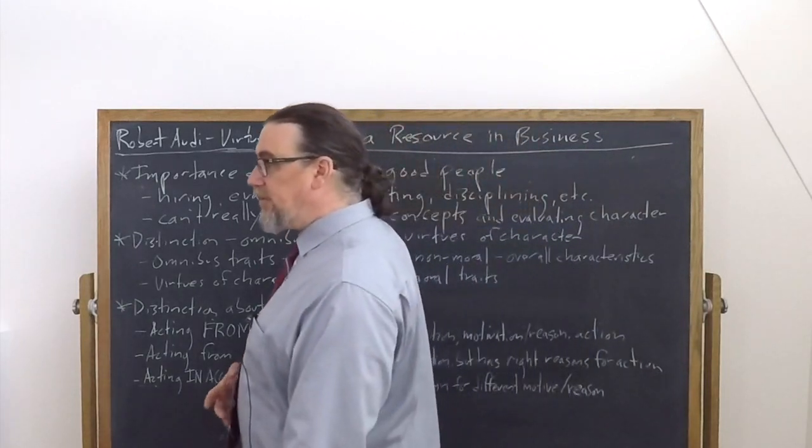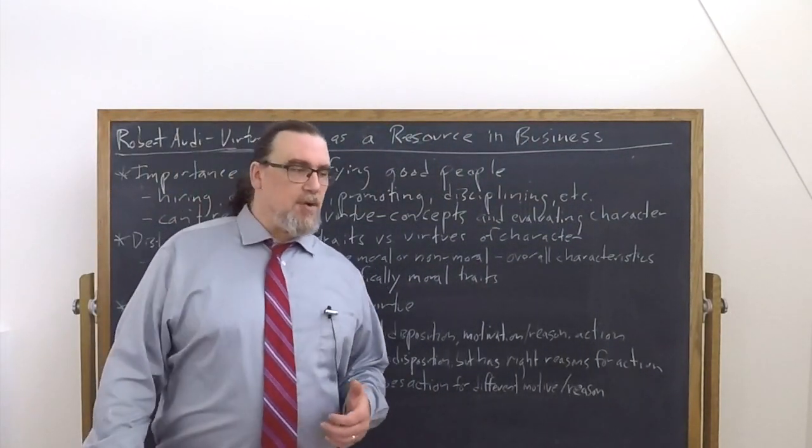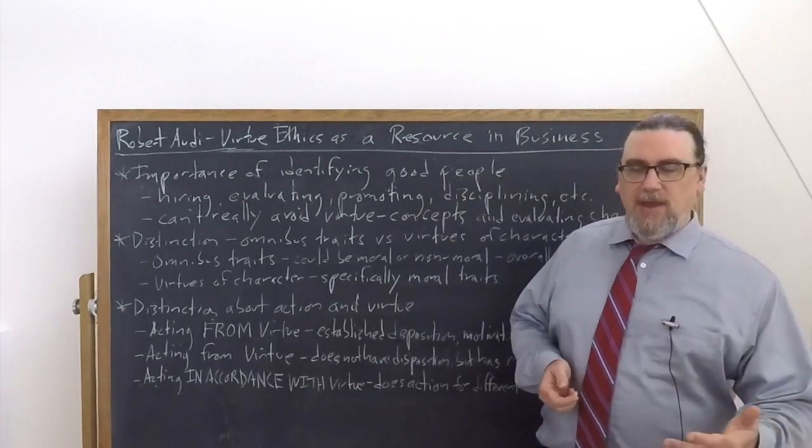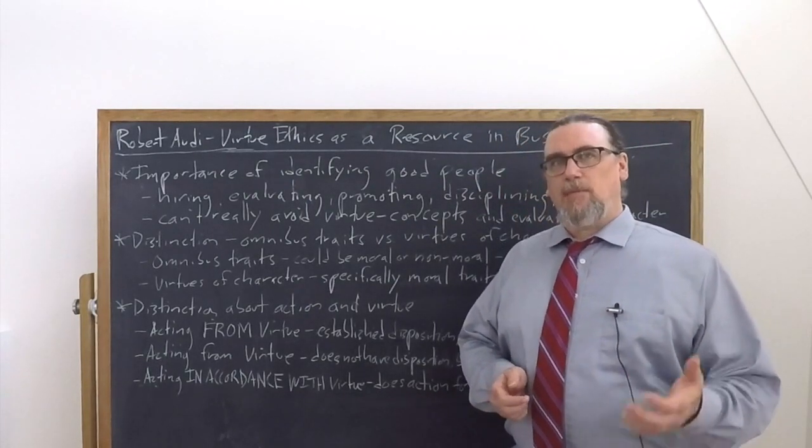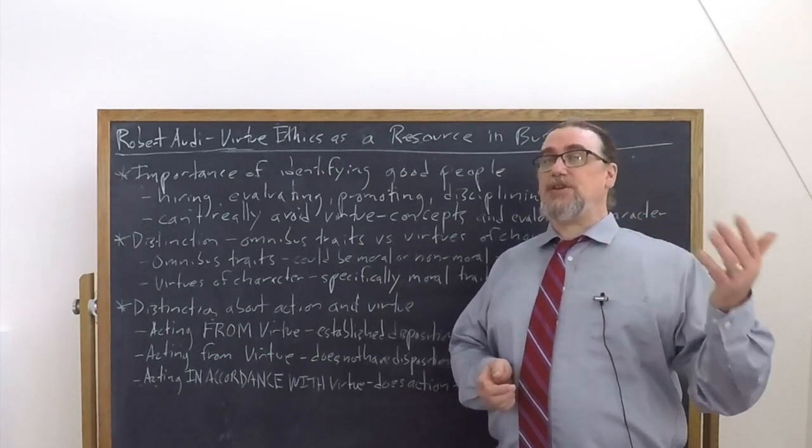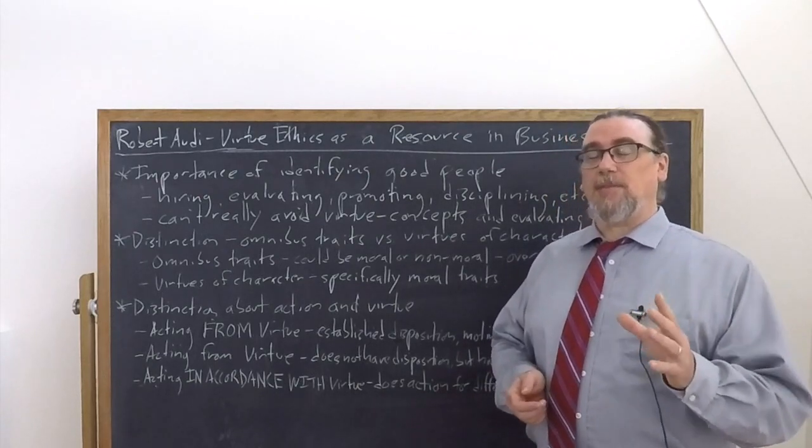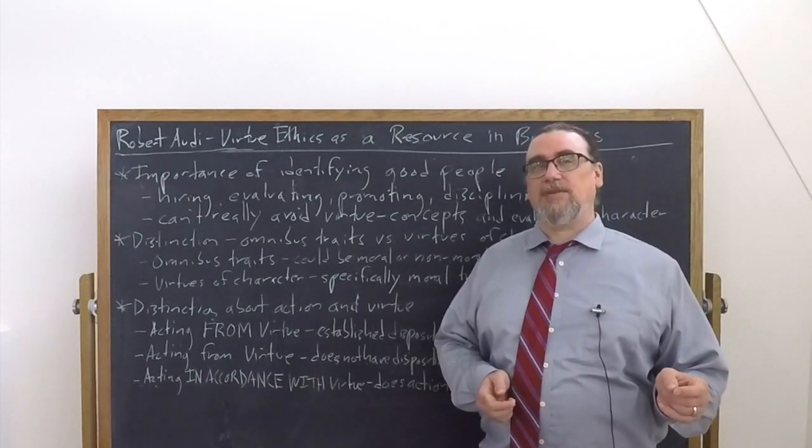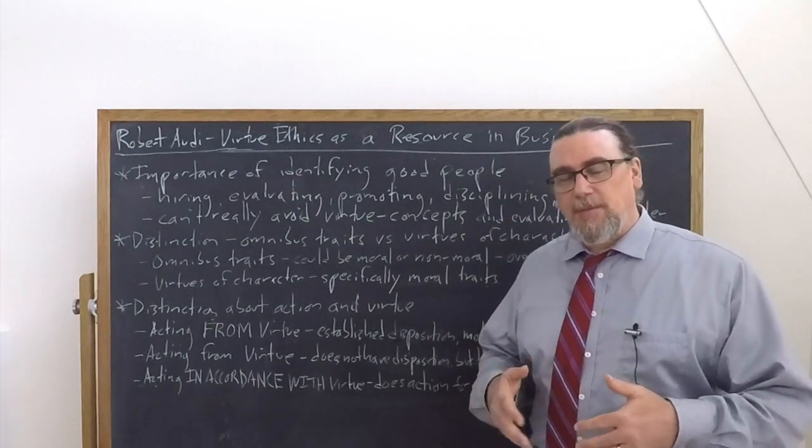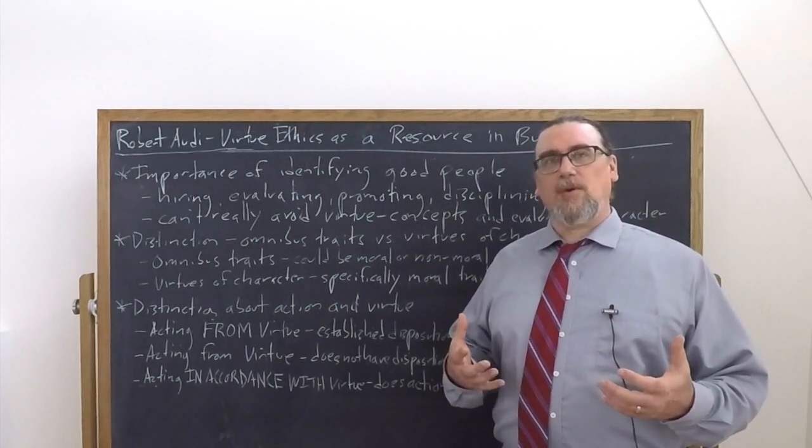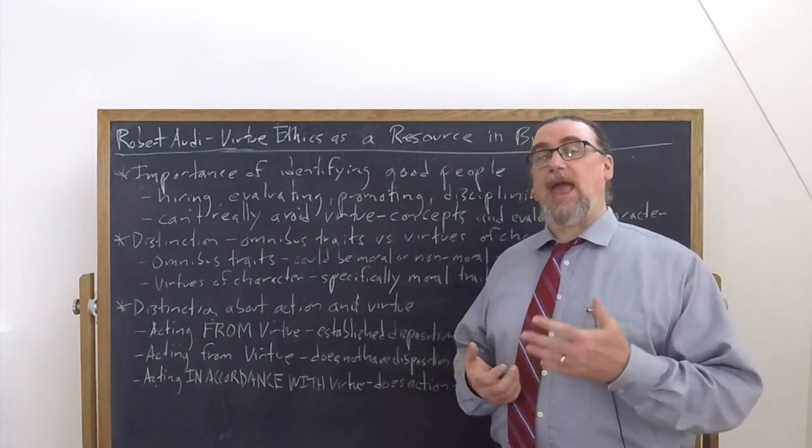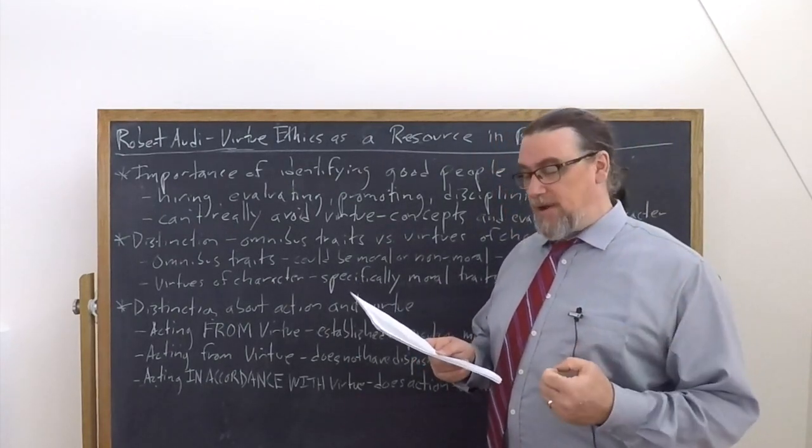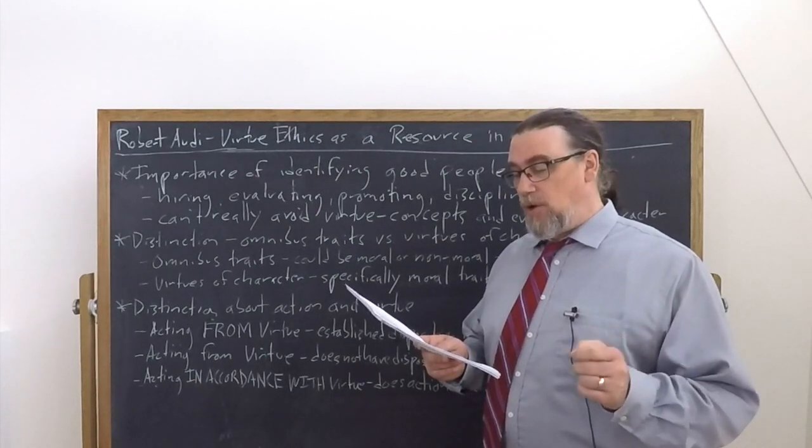Aristotle made a fundamental distinction that was followed throughout virtue ethics between people who do the right thing in a particular case by behaving in a way that a virtuous person would, but aren't actually virtuous. As a matter of fact, even a vicious person could sometimes in some cases do things that resemble the actions of a virtuous person, but they would be doing it for a completely different reason. In order for a person to be genuinely virtuous, they have to have that virtue established as a habit or a disposition within them.